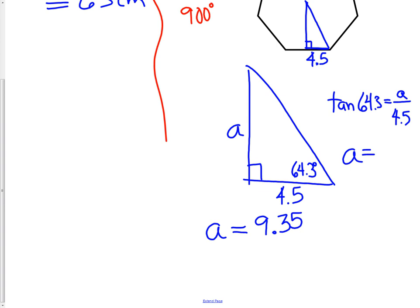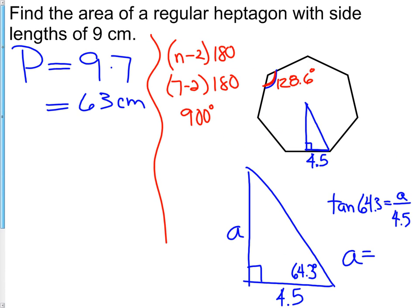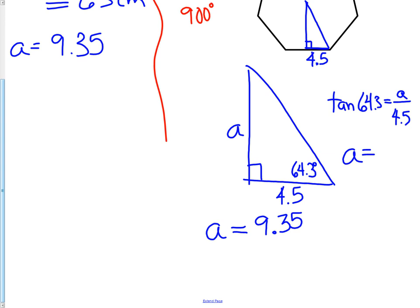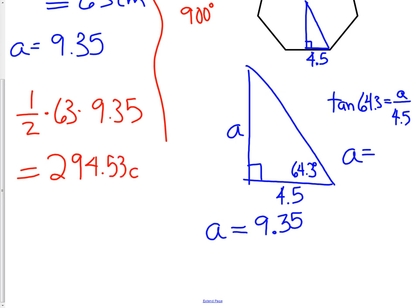Now we have all the information to calculate the area. The perimeter is 63 and the apothem is 9.35. Area equals one-half times 63 times 9.35, which gives us 294.53 centimeters squared.